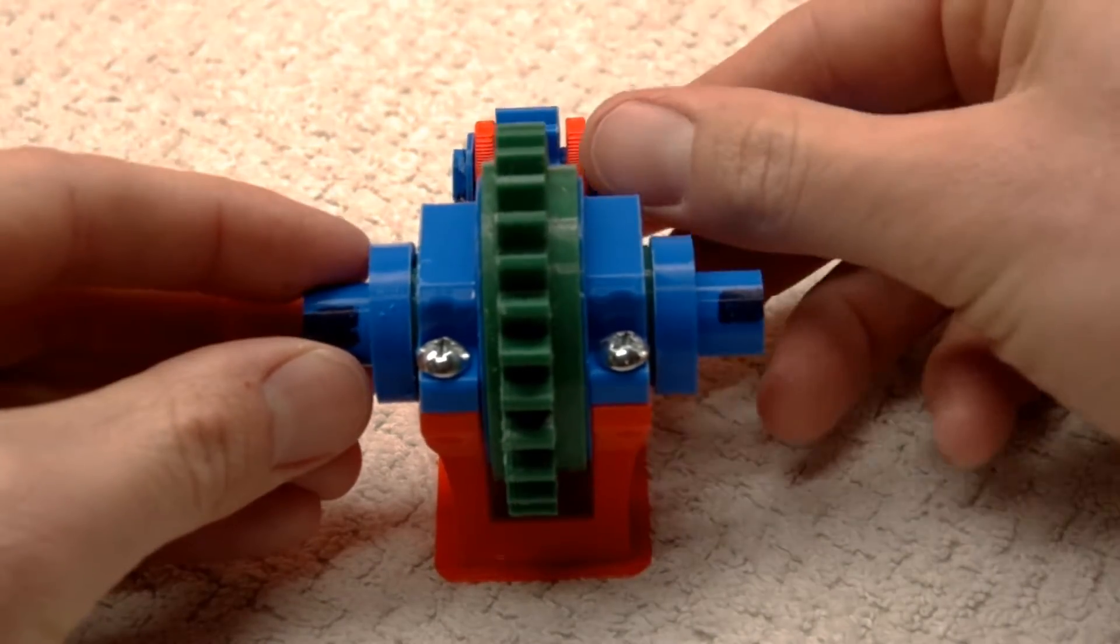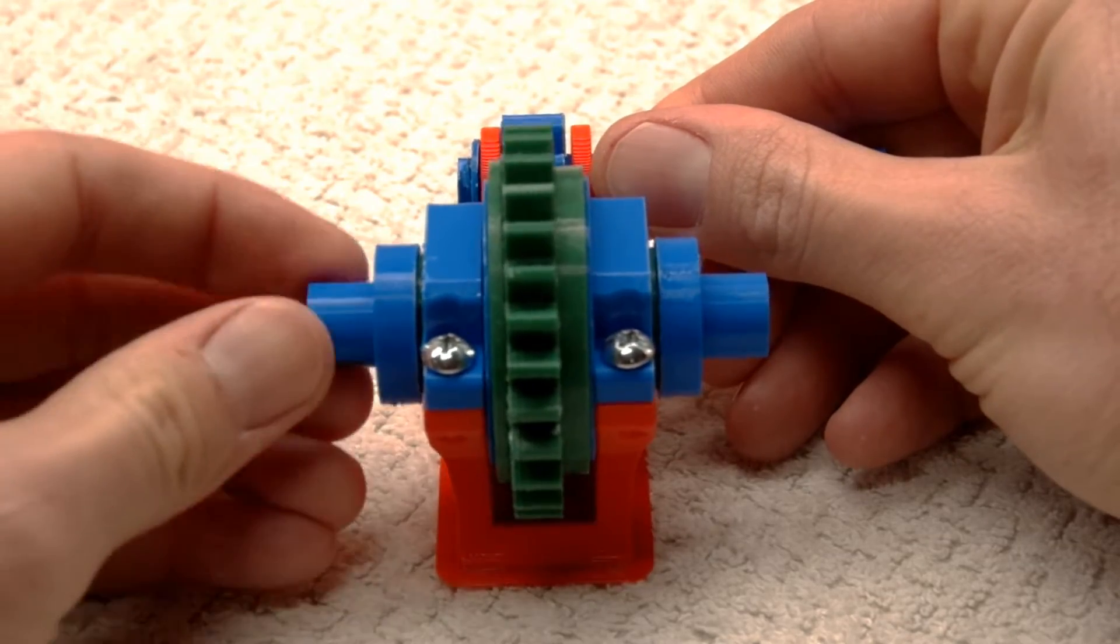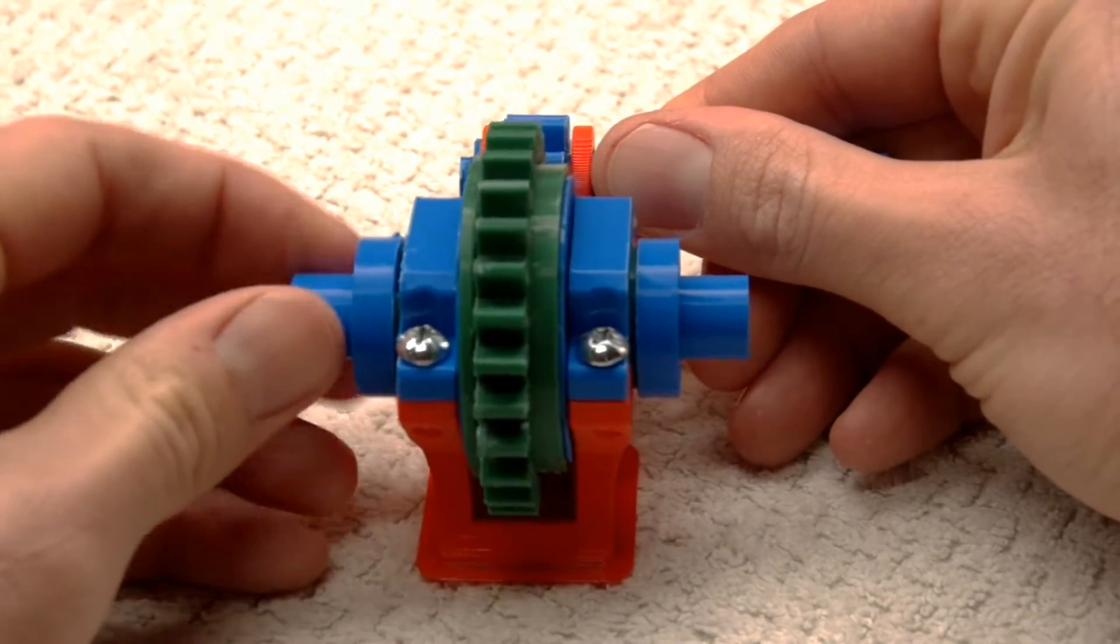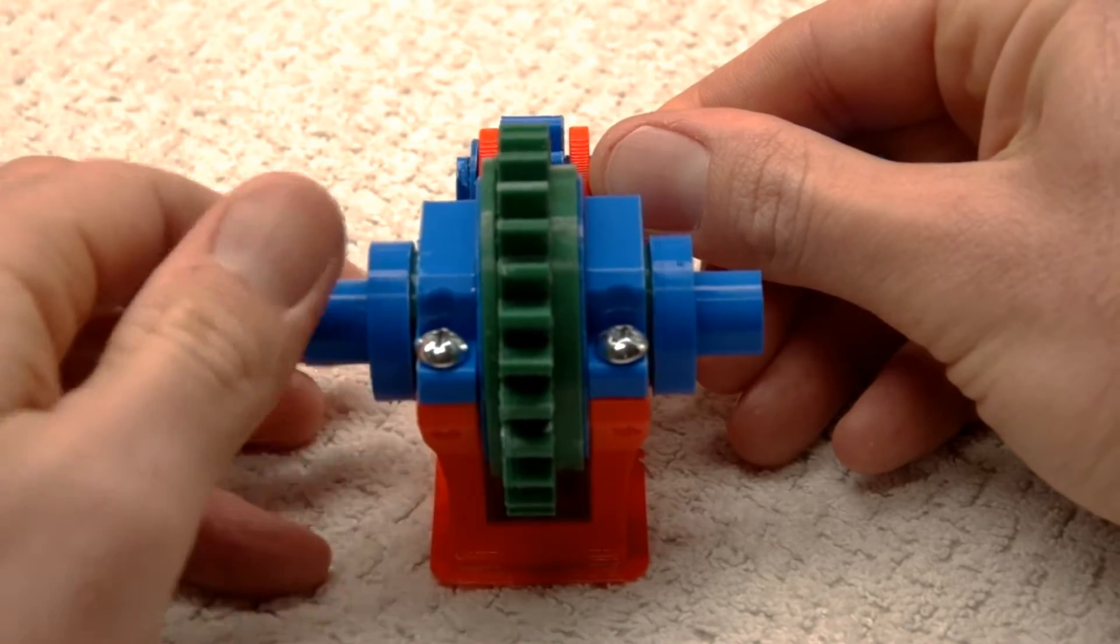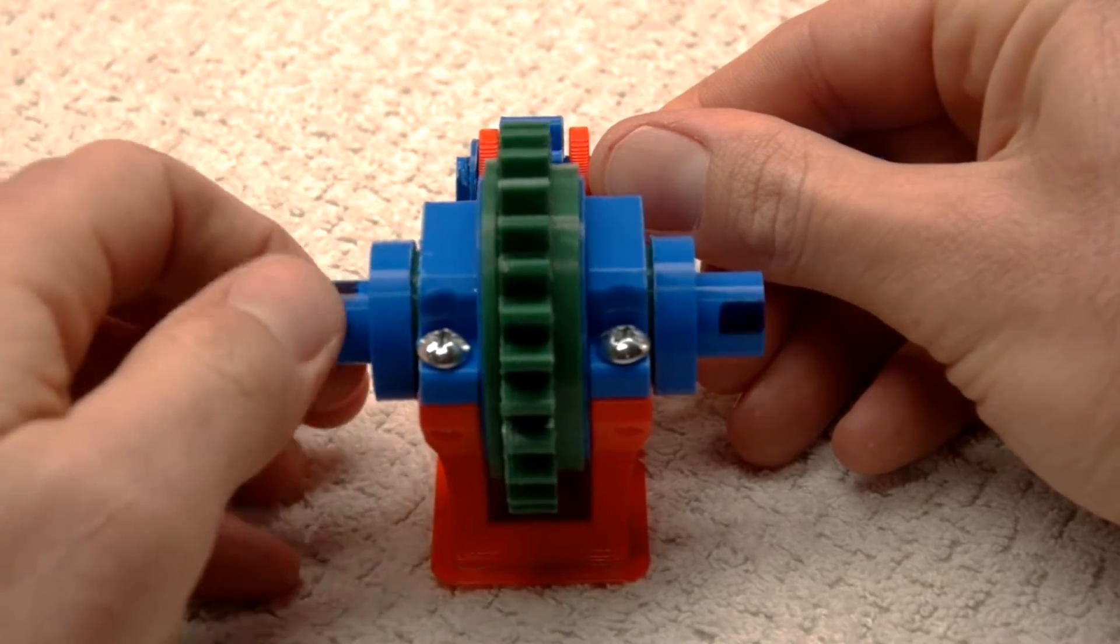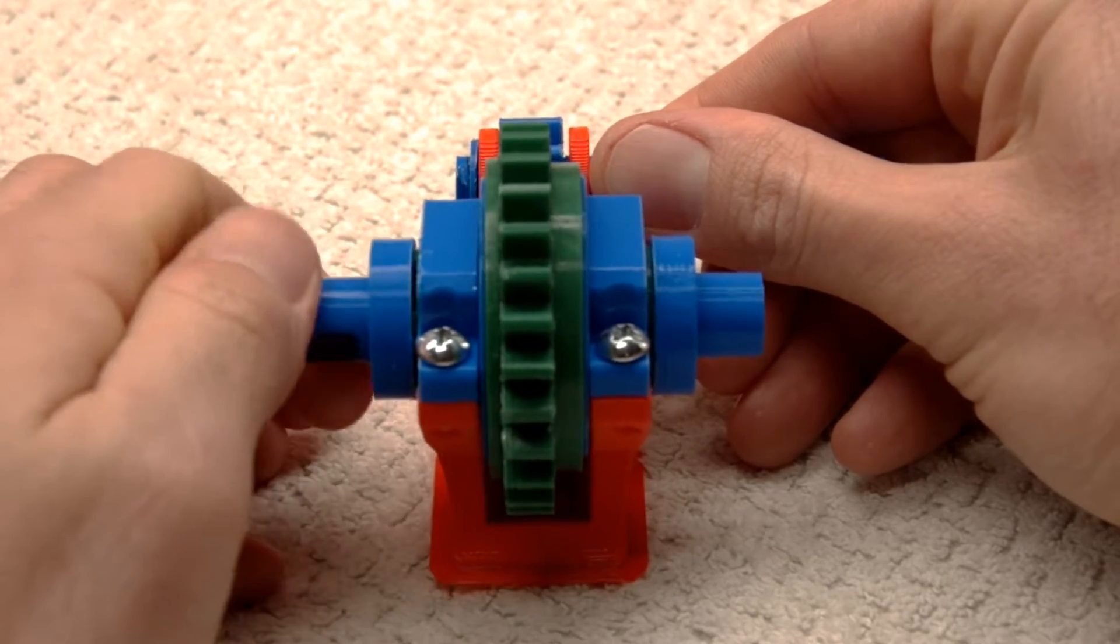Now, if we realign the timing marks and lock the input and carrier, rotating the left output should cause the right output to rotate in an equal and opposite direction. However, the ball bearings cause a little slippage and the timing marks aren't properly aligned anymore. This slippage is the biggest downside of the ball bearing differential.